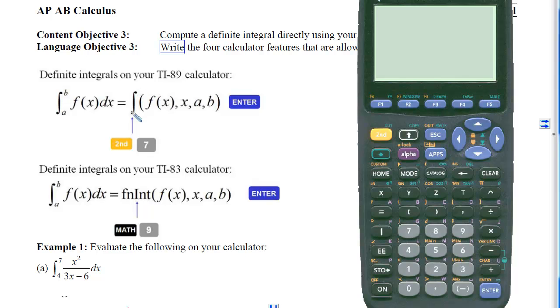We access this with 2nd7, then we enter the integrand, comma, the variable of integration, comma, the lower limit, comma, the upper limit, and then we hit Enter. On the TI-83s, it works similarly, except instead of using this 2nd7 for the integral symbol, we're going to go get the functions integral, which is located under Math 9. Otherwise, the syntax is the same.